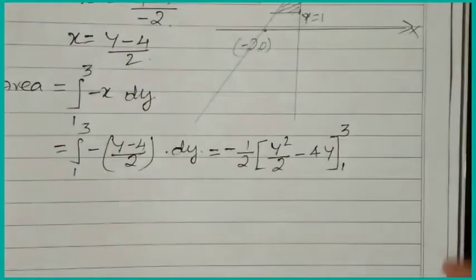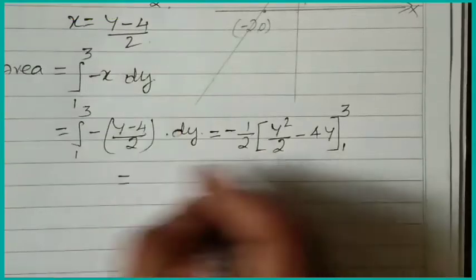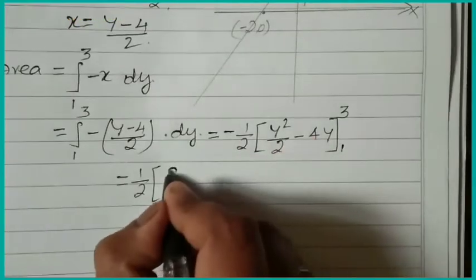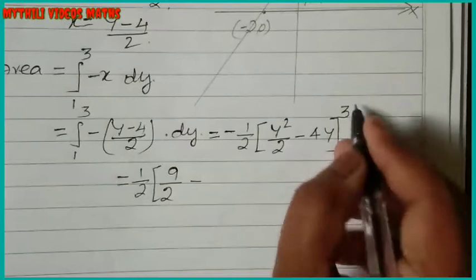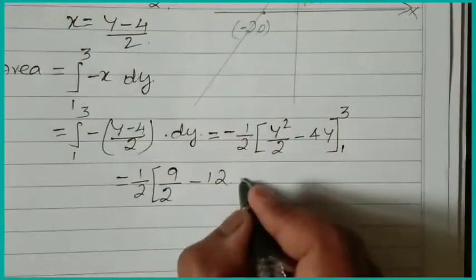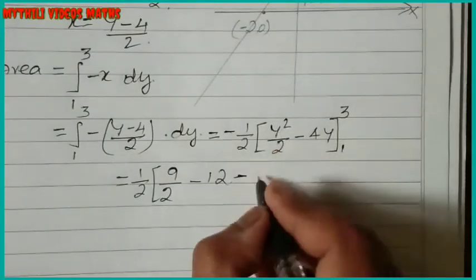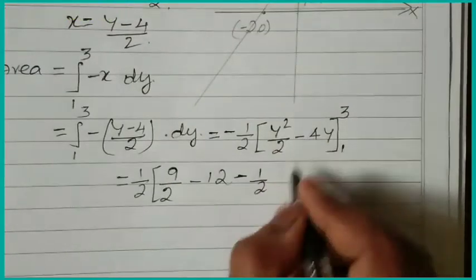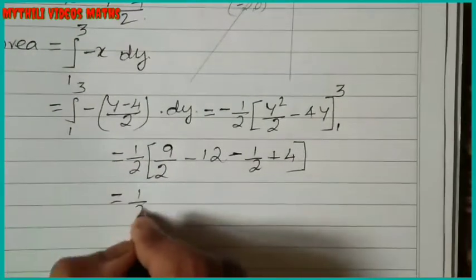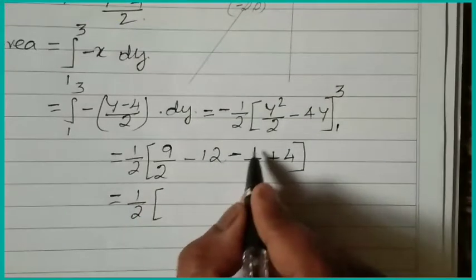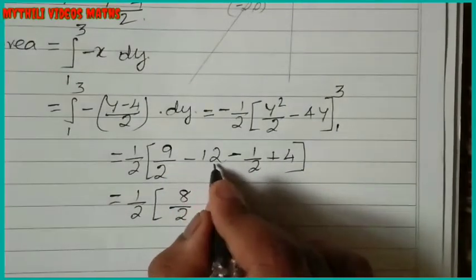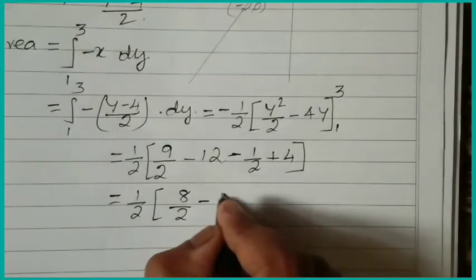Applying the upper limit 3: y squared divided by 2 gives 9 by 2, and 4y gives 12. Applying the lower limit 1: y squared divided by 2 gives 1 by 2, and 4y gives 4. So we get minus one-half times [(9 by 2 minus 12) minus (1 by 2 minus 4)]. This gives 9 by 2 minus 1 by 2 equals 8 by 2, and minus 12 plus 4 equals minus 8.